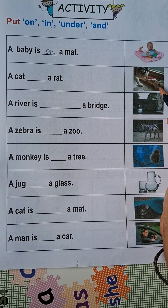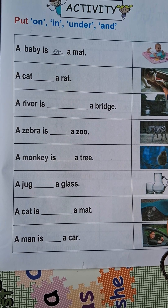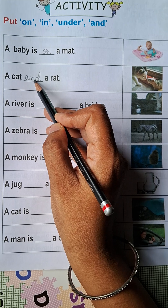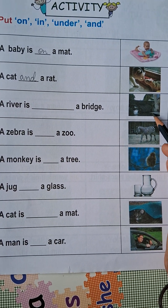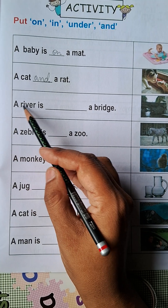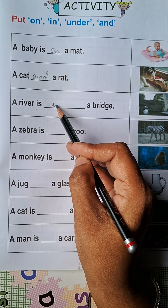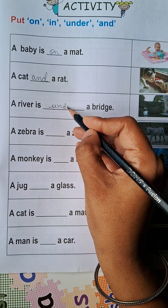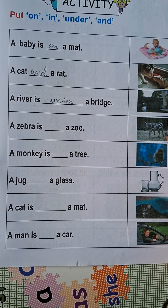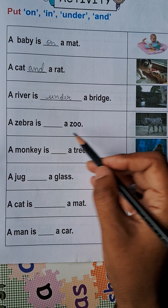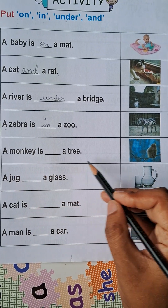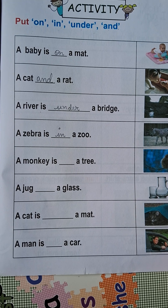Next there is a cat and a rat — do chizein, billi aur chuha, so to join two things we use 'and' — a cat and a rat. In this picture there is a river and it is under the bridge — niche ke liye we use 'under' — a river is under a bridge. Here there is a zebra and it is in the zoo — zoo ke andar, so we use 'in' — a zebra is in a zoo.